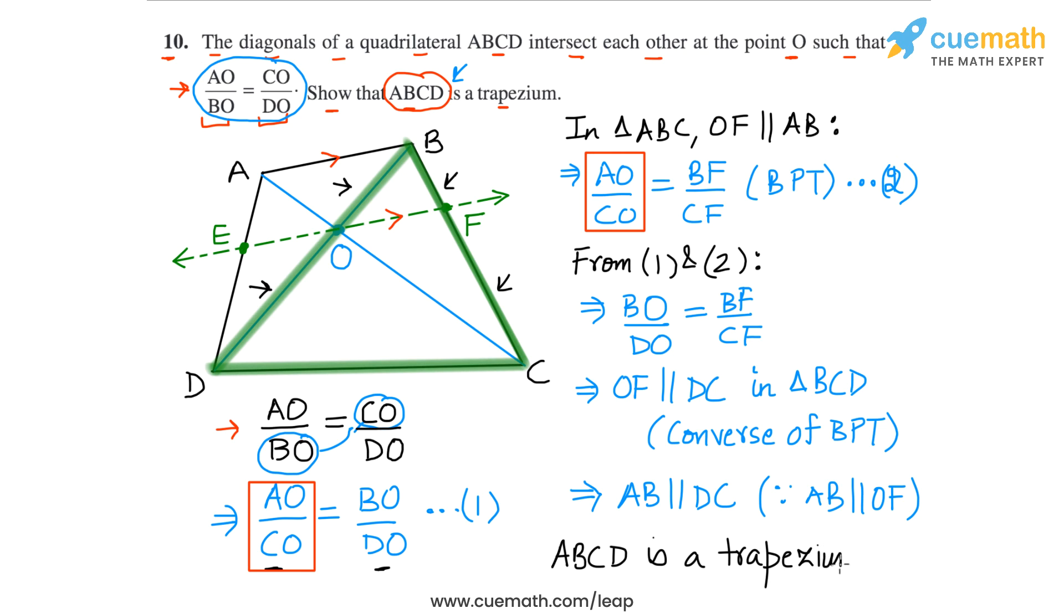This is what we had to prove. ABCD is a trapezium. So that completes our proof for question number 10.